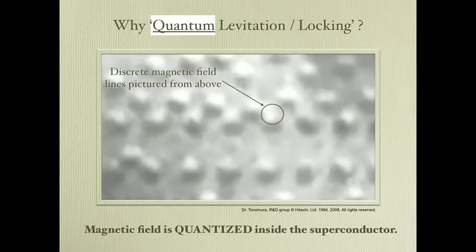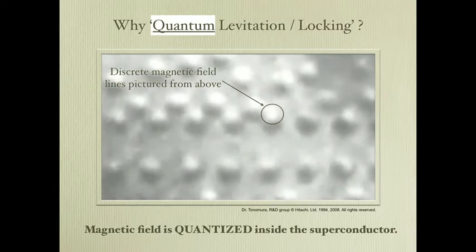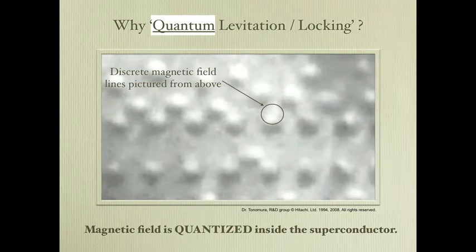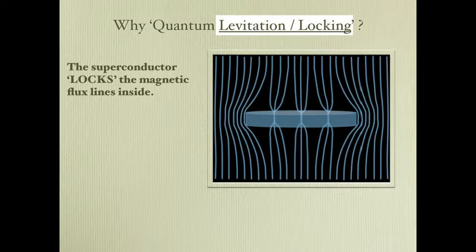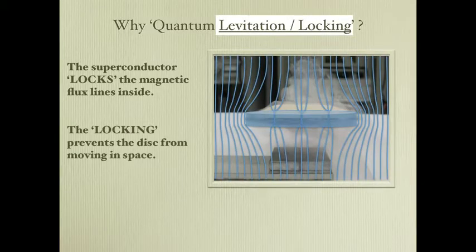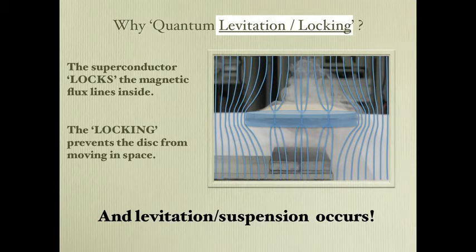This is why we call this effect quantum levitation and quantum locking. When we put a superconductor inside a magnetic field, strands of magnetic field are left inside. The superconductor doesn't like them moving around because their movement dissipates energy, which breaks the superconducting state. So it locks these strands — called fluxons — in place. By doing that, it locks itself in place, because any movement of the superconductor will change their configuration. So we get quantum locking.